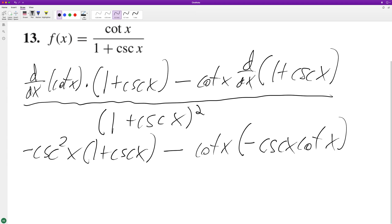I'm not going to write the denominator again just to save room. So we end up with negative cosecant squared x minus cosecant cubed x, and then distribute the minus sign, so we end up with plus cosecant x cotangent squared x.